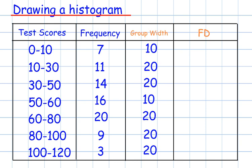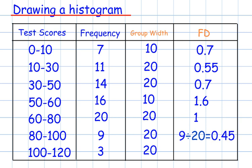To calculate the frequency density, we need to divide the frequency by the group width. So 7 divided by 10 equals 0.7. 11 divided by 20 is 0.55. 14 divided by 20 is 0.7. 16 divided by 10 is 1.6. 20 divided by 20 is 1. 9 divided by 20 is 0.45. And 3 divided by 20 is 0.15.